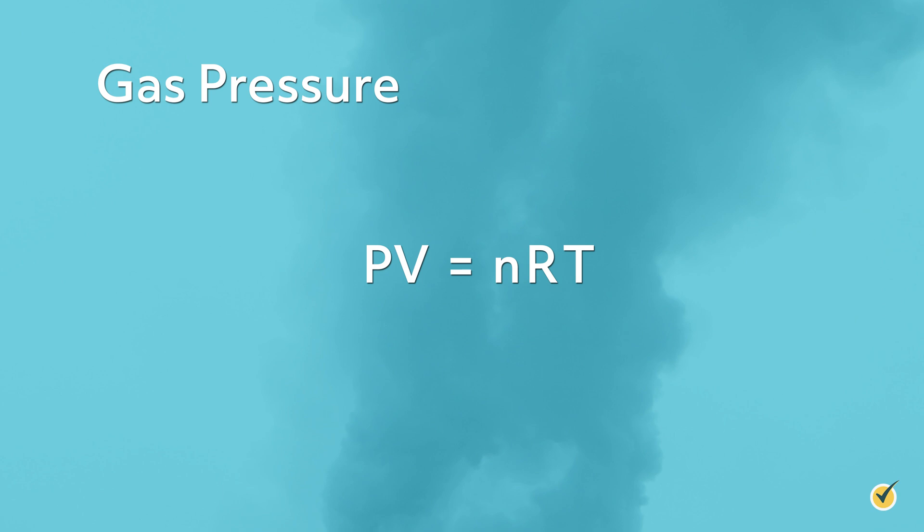PV equals NRT. In this equation, P is the pressure, V is the volume, T is the temperature, R is the ideal gas constant, and N is the amount of gas in units of moles.